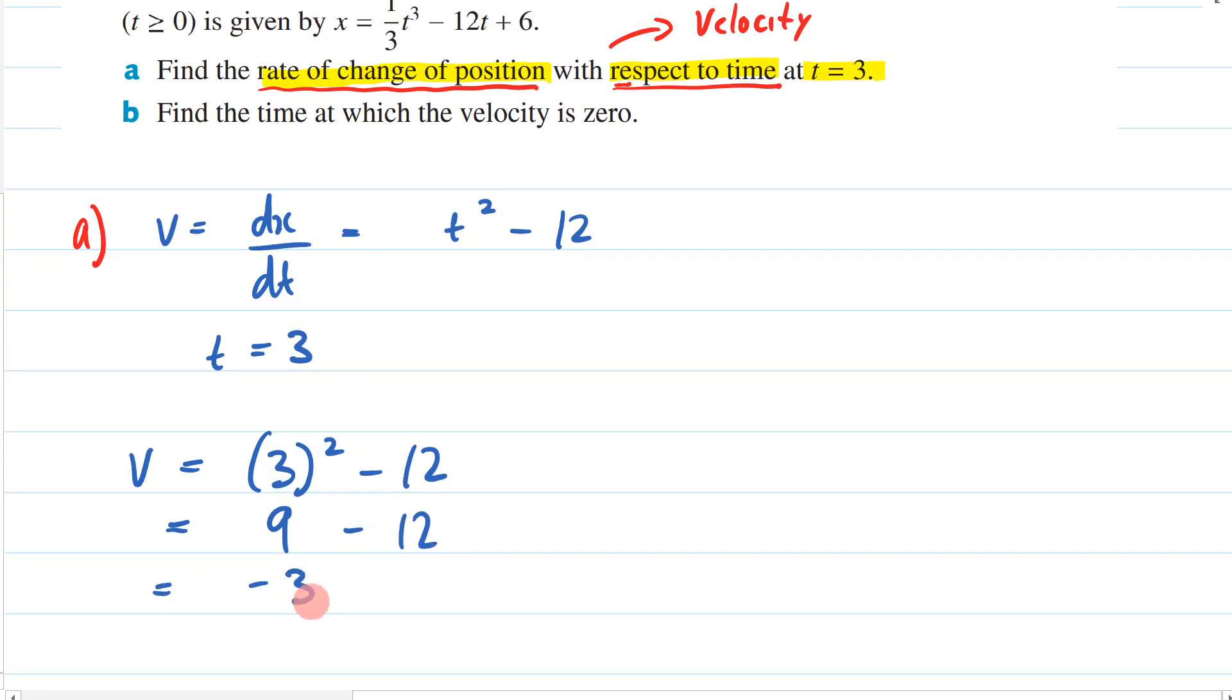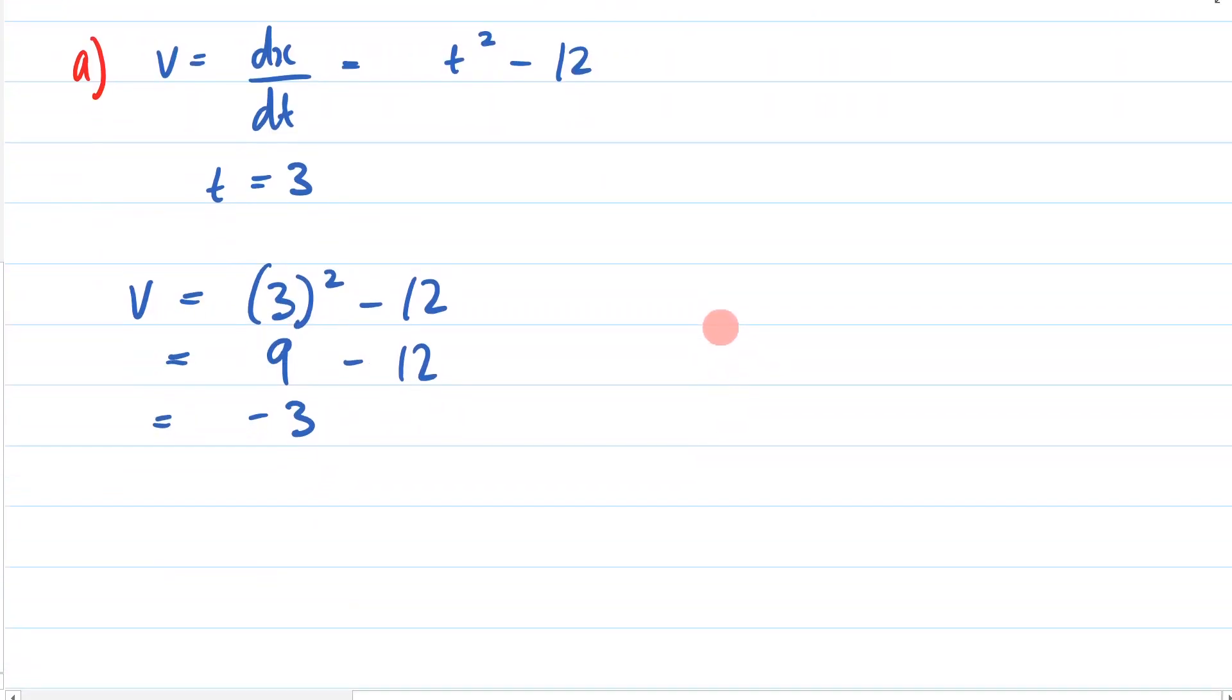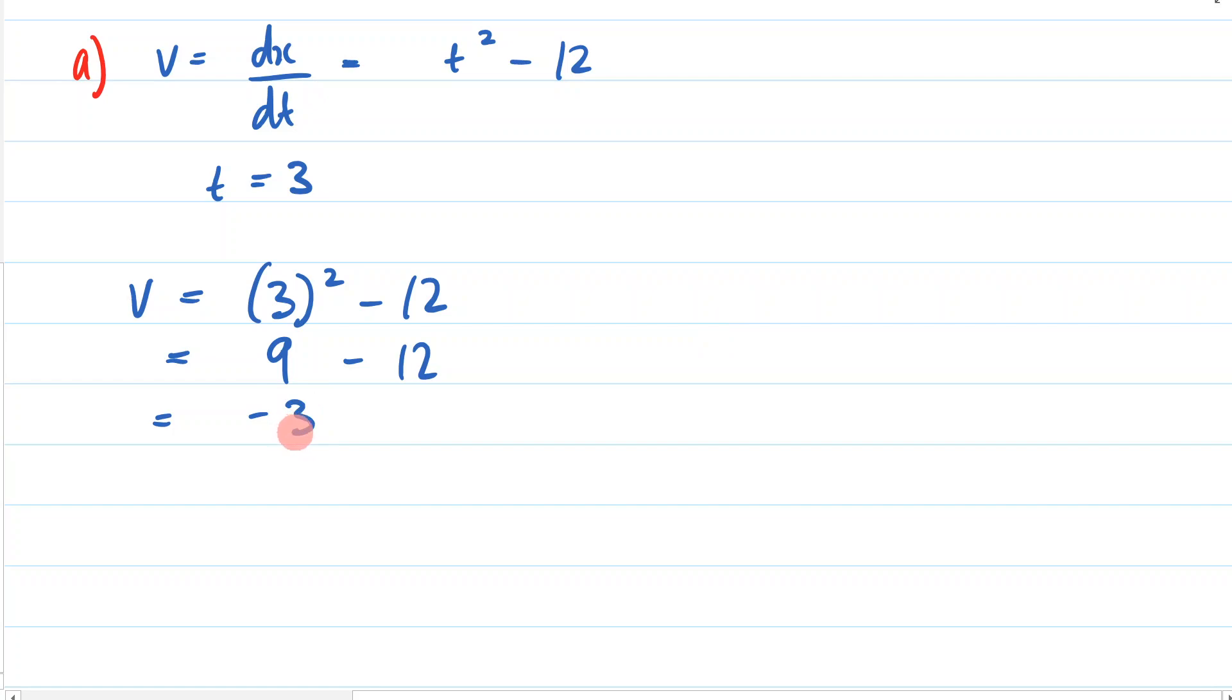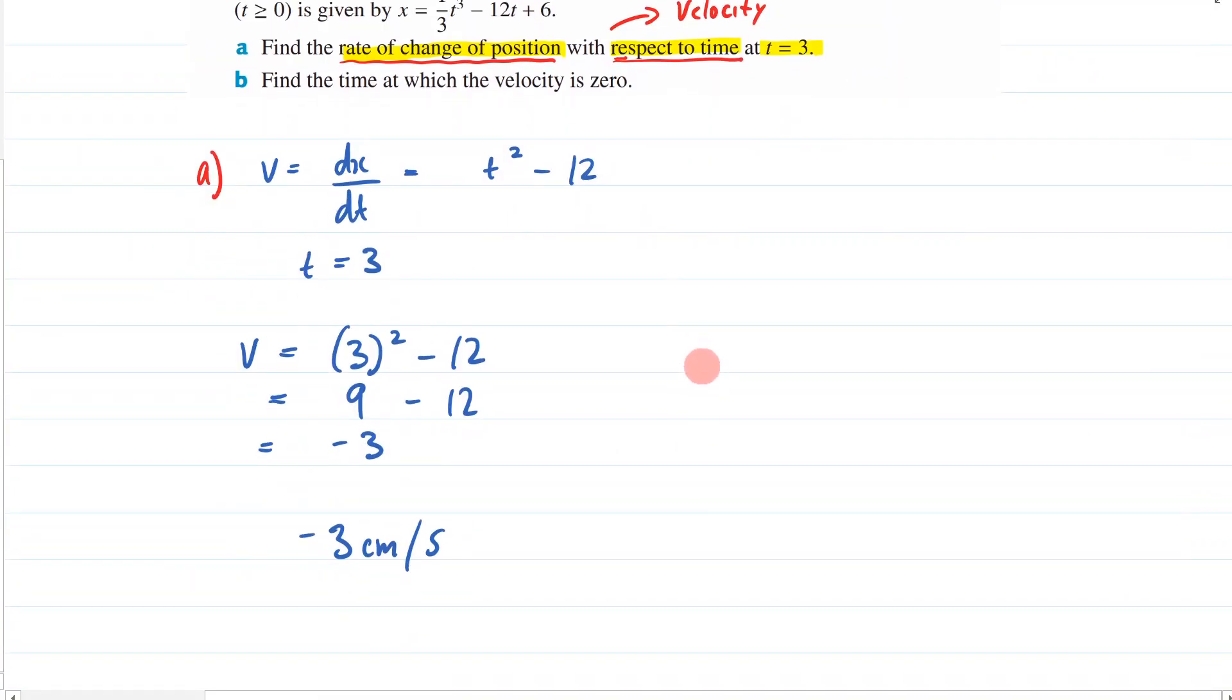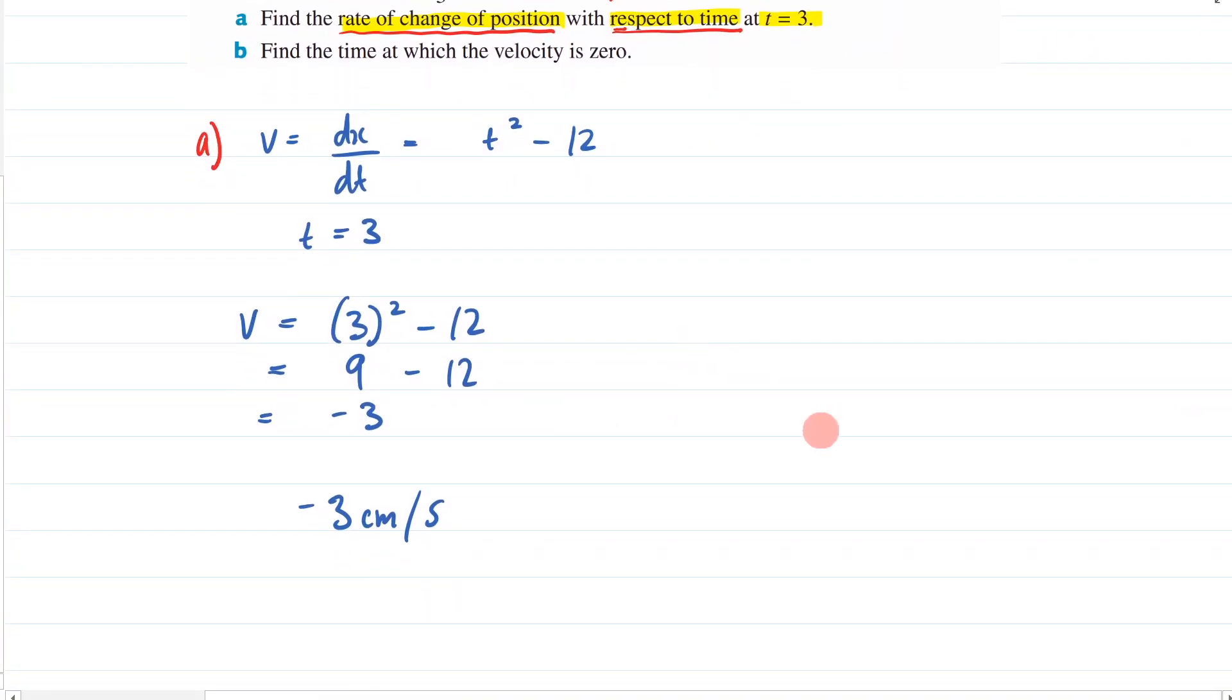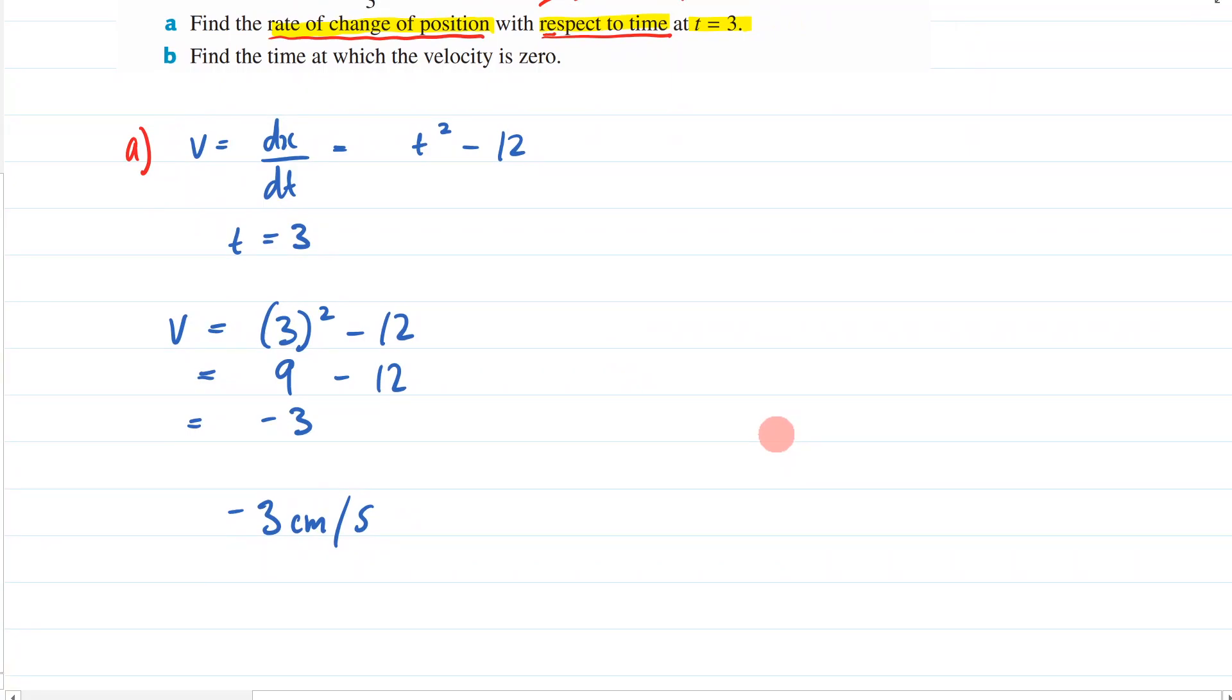So that means the rate of change of its position with respect to time at t equals 3 is negative 3. So it's moving to the left at 3 centimeters a second, because x was in centimeters and t with respect to time. But we can just write it like that. And I think in the back of the book it just says negative 3.